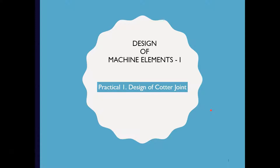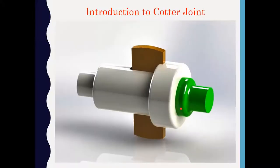Good morning students. Today we have to cover the design of a cotter joint. This is the model of a cotter joint. The green portion is called the spigot, the white portion is called the socket, and the brown portion is called the cotter.